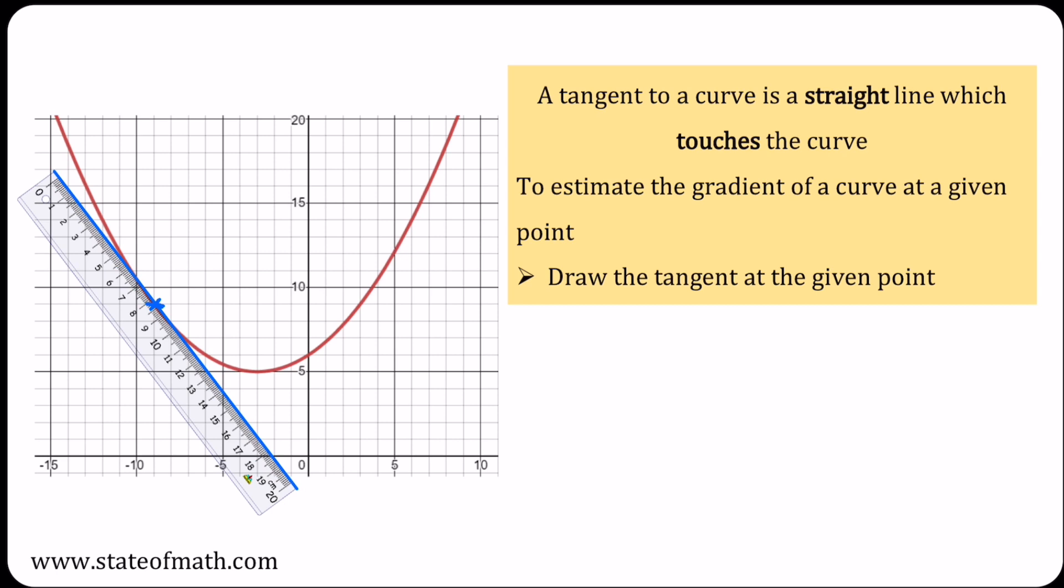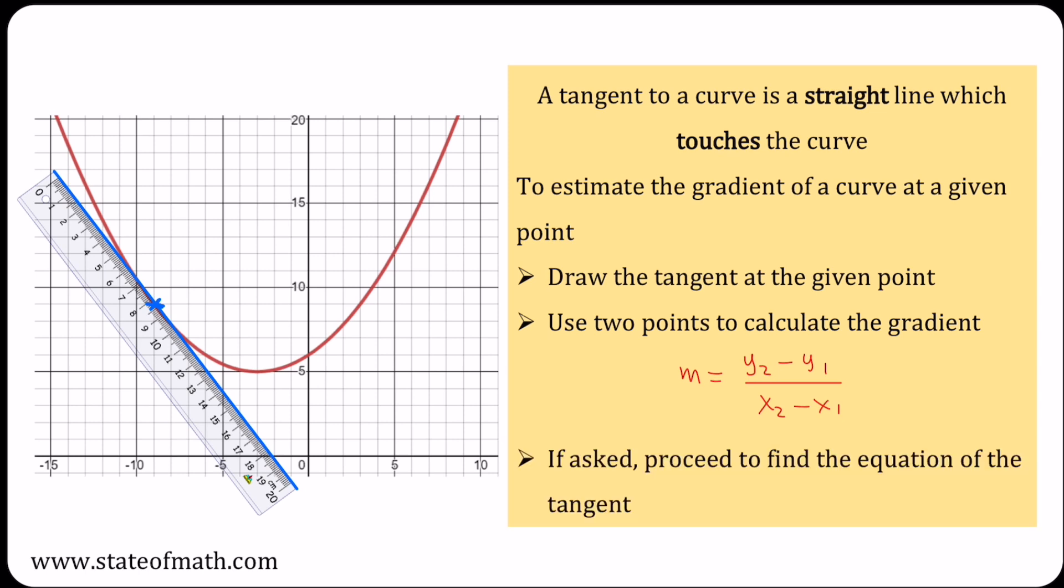Let's recall that given two points, we can easily calculate the gradient by saying the gradient is y2 minus y1 over x2 minus x1. There are cases where we will be asked to proceed in finding the equation of the tangent. We also need to draw our attention to the fact that each one of us will draw a somewhat similar but not identical straight line, so we expect different yet similar answers with regards to the gradient.